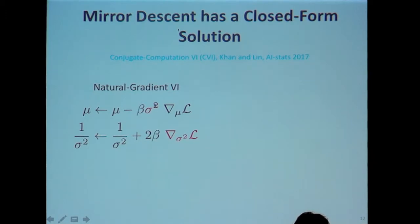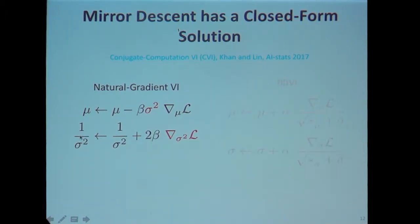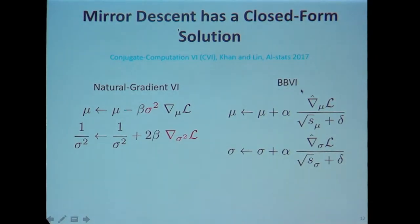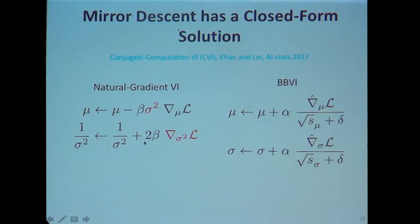Compared to black box variational inference — where you update mean and choose some parameterization of sigma, then find scaling vectors in some ad hoc way — natural gradient says that the scaling should be sigma squared. The scaling for the precision update is just one. This is the main foundation for why the algorithm looks like RMSProp: you're adapting the step size of the mean parameter with the variance parameter, which is very natural.